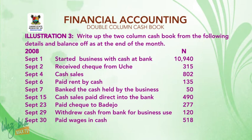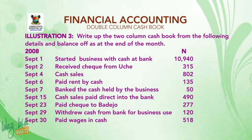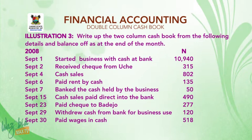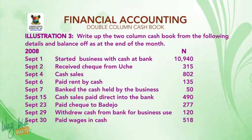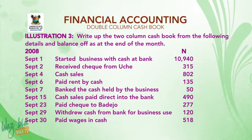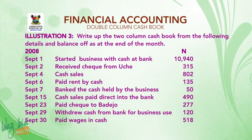2008 transactions: September 1 — started business with cash at bank, 10,914 Naira. September 2 — received cheque from Uche, 315 Naira. September 4 — cash sales, 802 Naira. September 6 — paid rent by cash, 135 Naira. September 7 — banked the cash held by the business, 15 Naira. September 15 — cash sales paid directly into the bank, 419 Naira. September 23 — paid cheque to Biyejob, 277 Naira. September 29 — withdrew cash from bank for business use, 120 Naira. September 30 — paid wages in cash, 518 Naira.